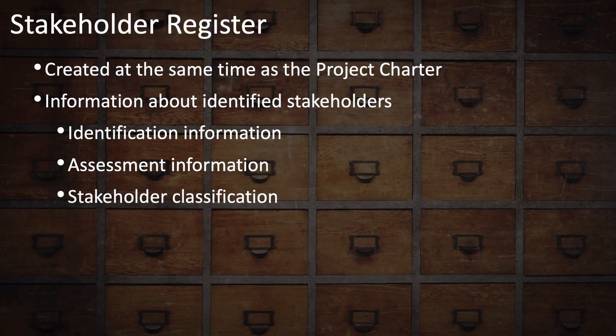The stakeholder register is created at the same time as the project charter during the initiating process group. It contains information about the identified stakeholders — information such as identification information about the stakeholder, assessment information, and stakeholder classification. We will get into each of these in some detail.